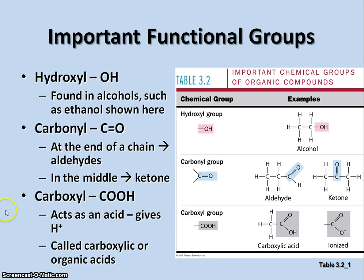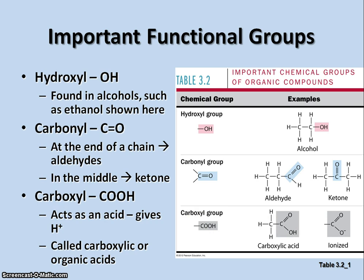The third group is a carboxyl, which is COOH. This is the organic acid group, or carboxylic acid group. This functional group acts as an acid — it gives up hydrogen ions, making it an acid. The carbon is double-bonded to an oxygen with a hydroxyl group on the other side. When it ionizes, it loses that hydrogen and donates a hydrogen ion, producing the acidic component. We'll see carboxyls on amino acids, nucleic acids, fatty acids, and so forth.